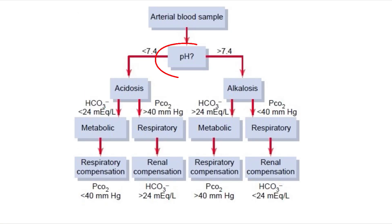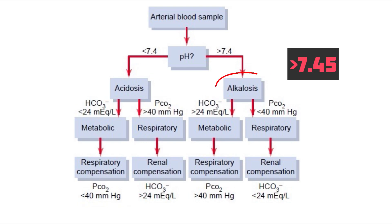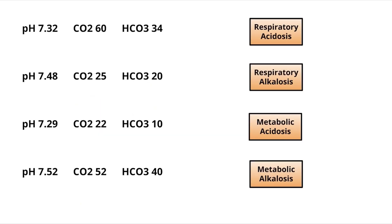Now for the approach: the first thing is to check the pH. If pH is less than 7.35, it is acidosis; if more than 7.45, it is alkalosis. Once acidosis or alkalosis is established, decide whether the process is metabolic or respiratory. If the primary disorder is metabolic, the compensatory mechanism is respiratory, and vice versa. We use the ROME mnemonic and the direction of CO2 and bicarbonate relative to pH.